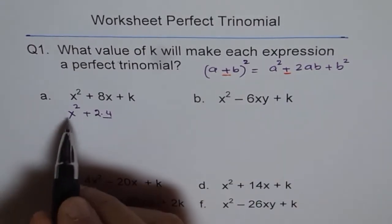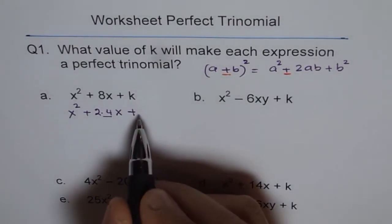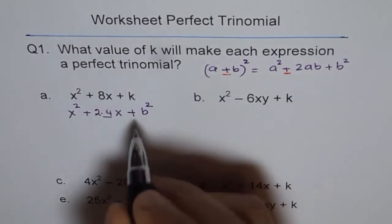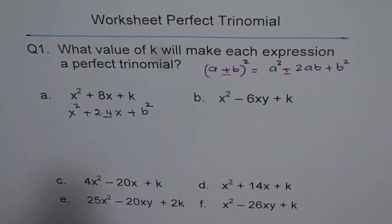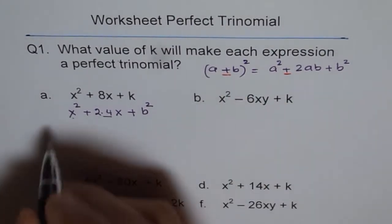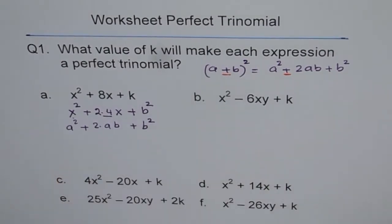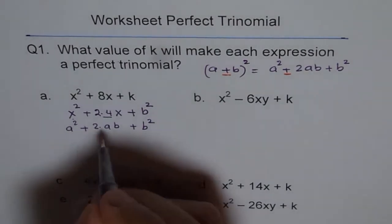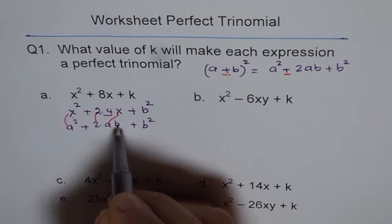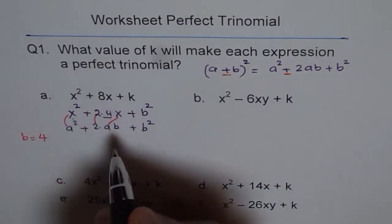So we have 2 times a and b, where a = x. Writing out the formula a² + 2ab + b² and comparing: a = x, the 2 is already there, so b must be 4. We get b = 4 by comparison.